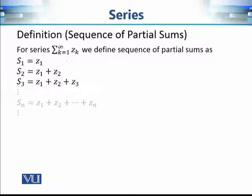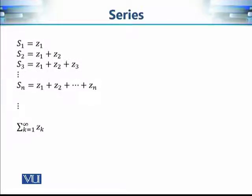When n approaches infinity, it means we are adding the first infinitely many terms of the series — in other words, when n approaches infinity, S_n becomes exactly the infinite series. So checking the convergence or divergence of this sequence of partial sums gives us answers about the convergence or divergence of this infinite series. Convergence means whether the series equals some fixed complex number; divergence means it does not — it goes to infinity, for example.